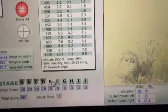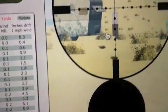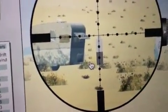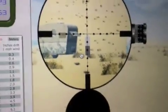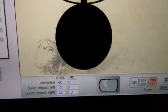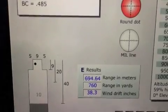Stage E. Ranging... I have two and a half, so I'm going to hold a half a mil high, about there. And it looks like the wind's picked up, so I'm going to put on a little more windage and fire. 760 yards.